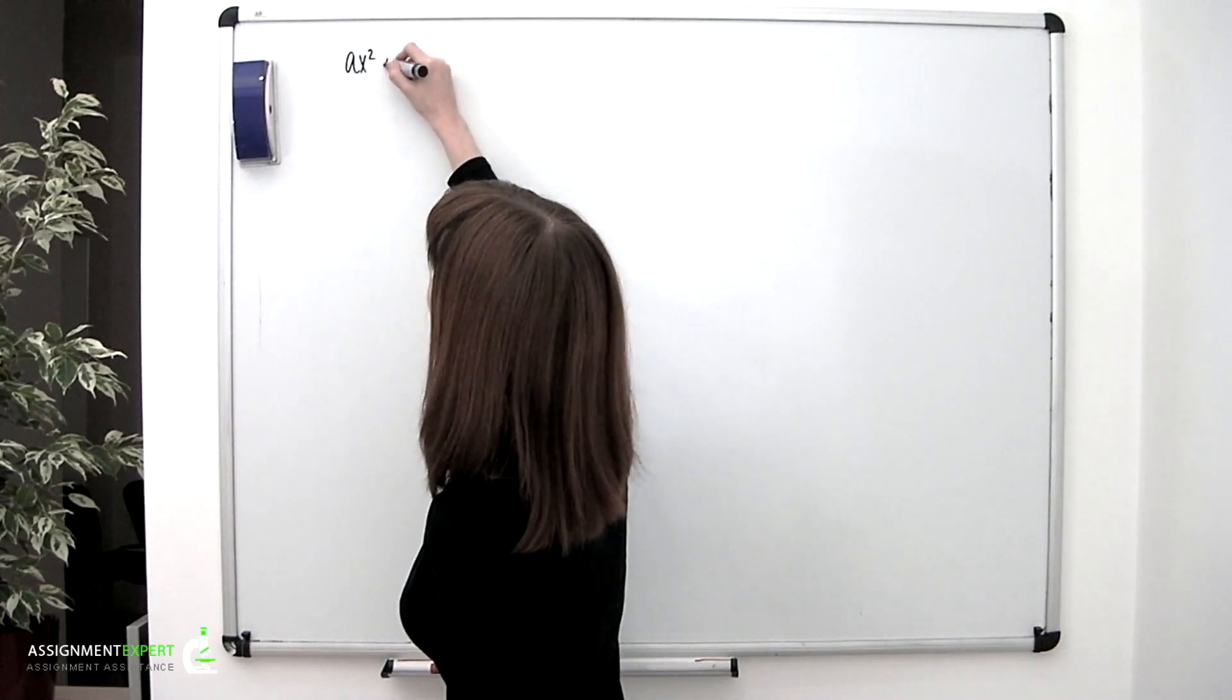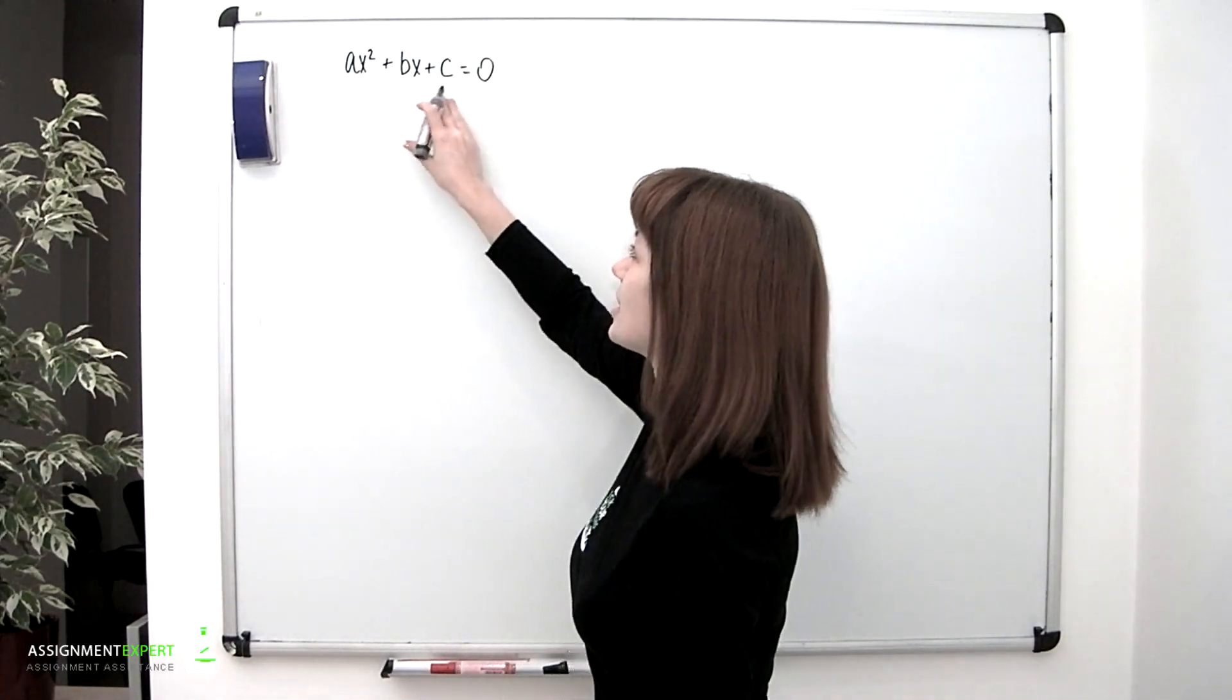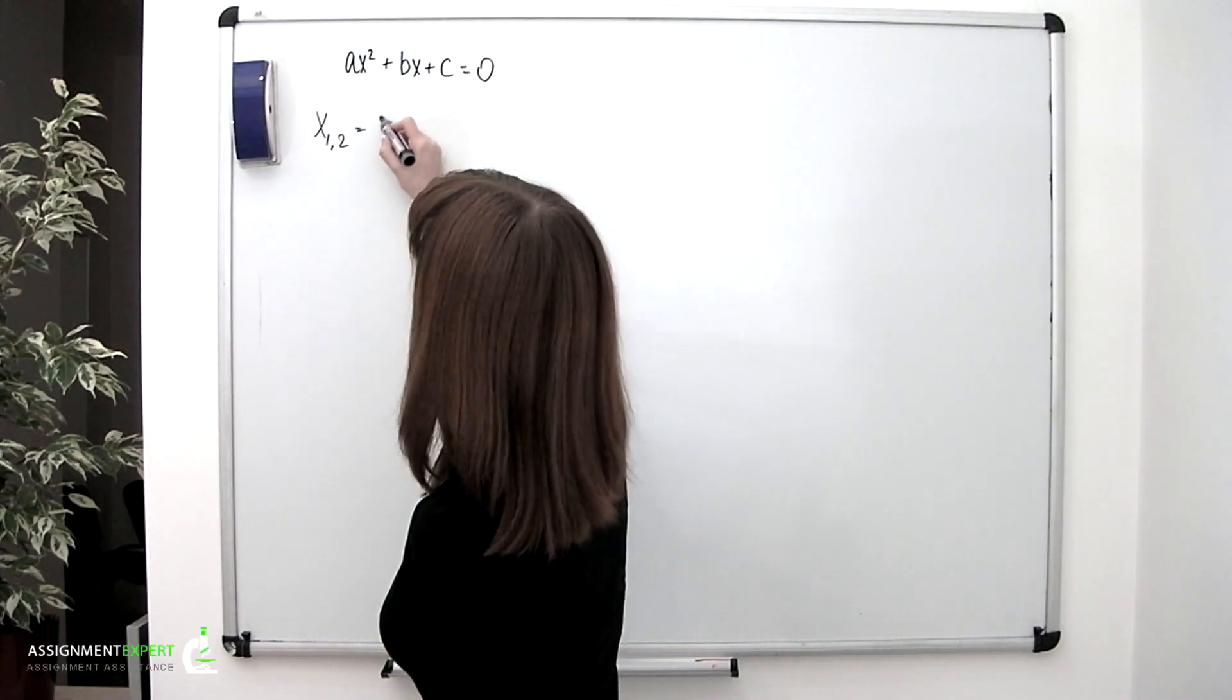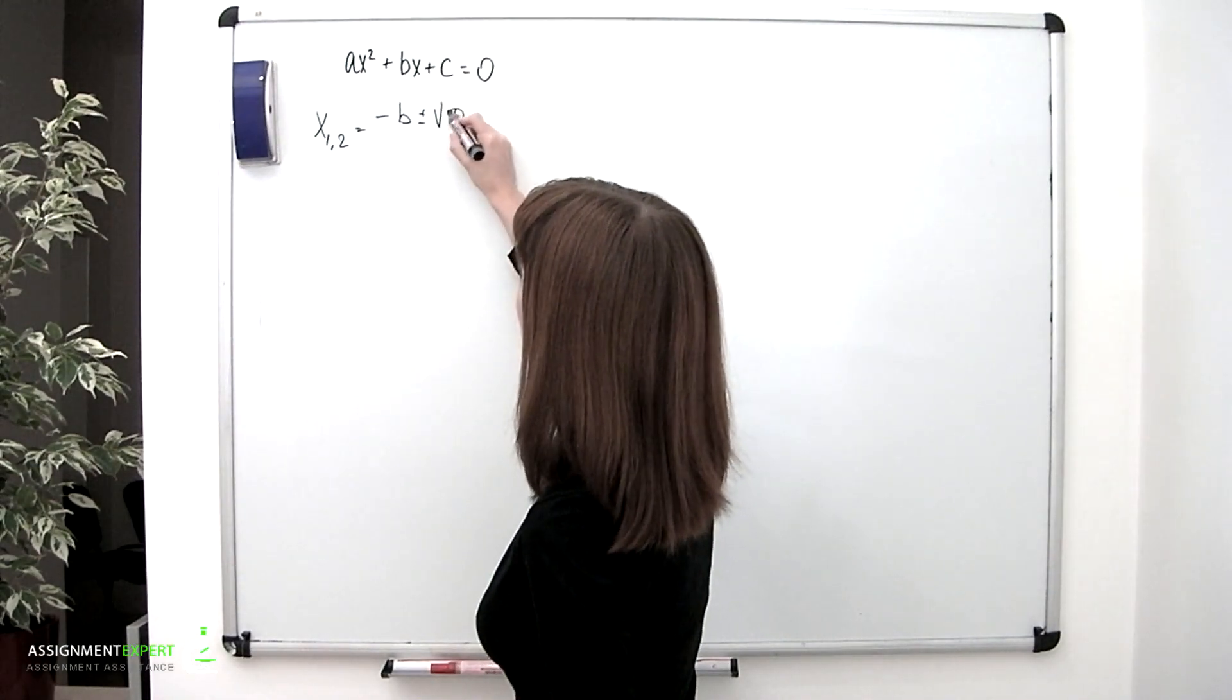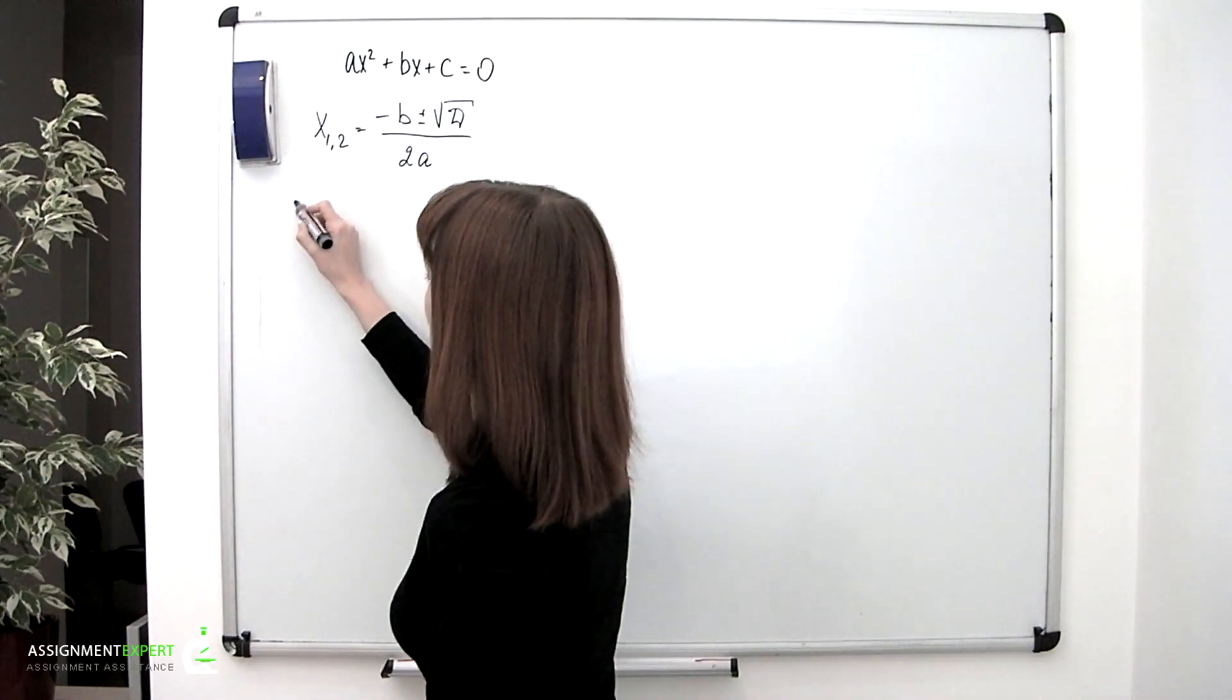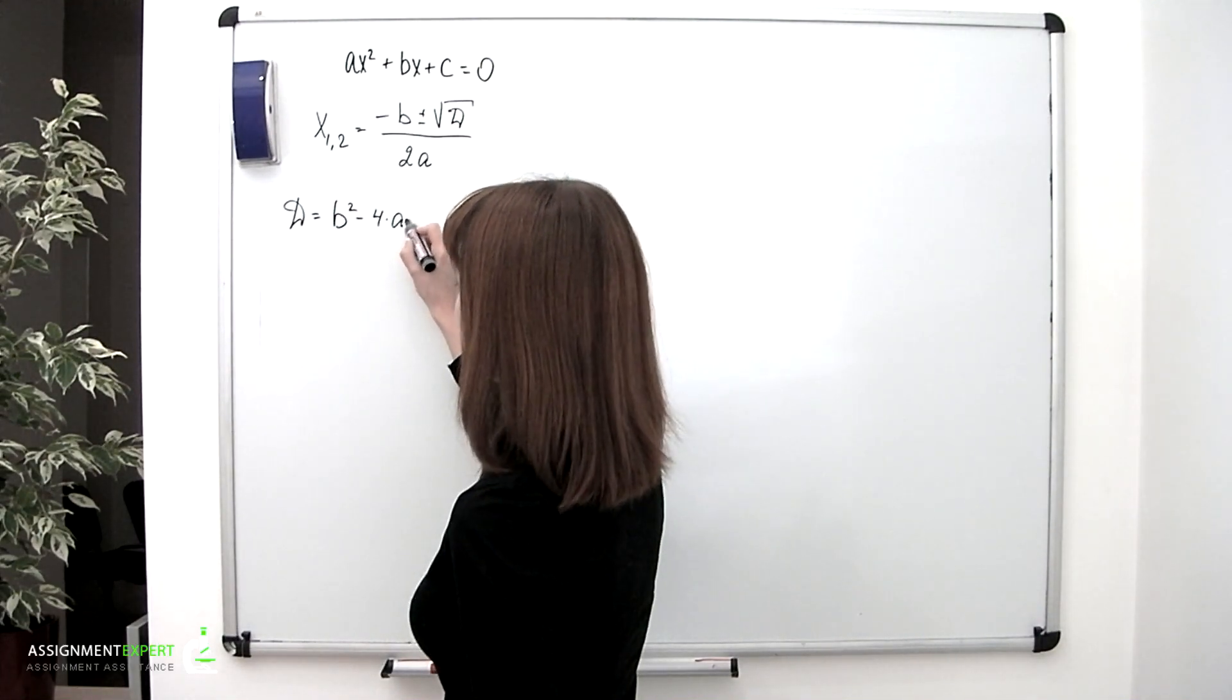It goes like this: ax² + bx + c = 0, where a, b, and c are constants. Roots of such equations are found by the well-known formula: x = (-b ± √d) / 2a, where d is the discriminant of an equation found by the formula d = b² - 4ac.